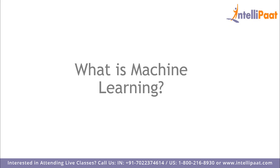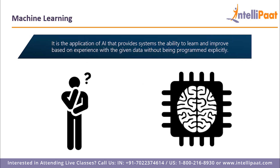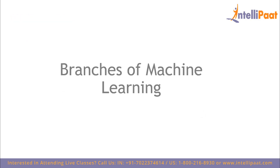Machine learning is the ability of a machine to learn by itself without being explicitly programmed. We expose a machine to different experiences and based on those experiences it learns — all without any explicit programming. Machine learning comes under artificial intelligence, and reinforcement learning also comes under artificial intelligence.